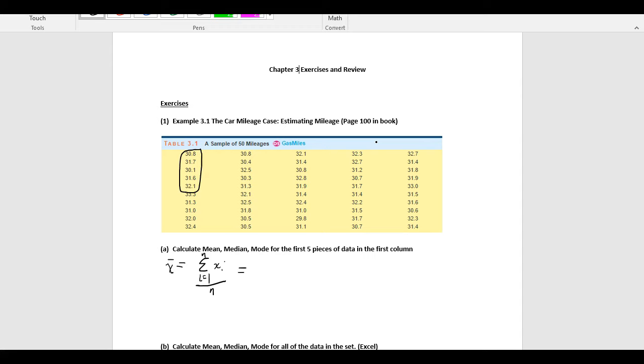We're going to go x bar is equal to the summation from i equal one to little n of x sub i all over n. And in this case, we know that n is five because we have a sample of five pieces of data. So, this is going to look like x1 plus x2 plus x3 plus x4 plus x5 all over five. We have 30.8 plus 31.7 plus 30.1 plus 31.6 plus 32.1 all over five. We get 156.3 over five, which is 31.26.